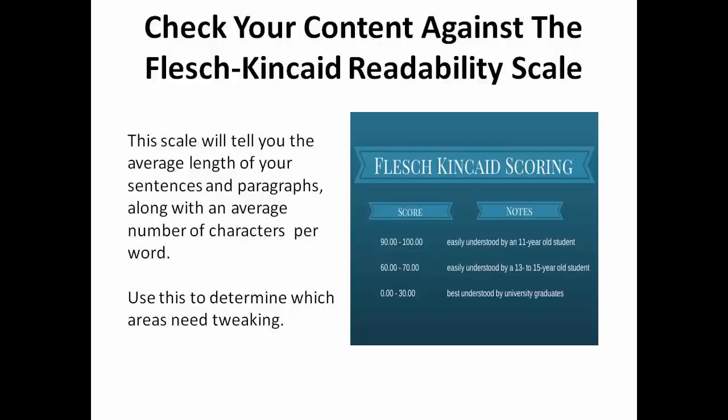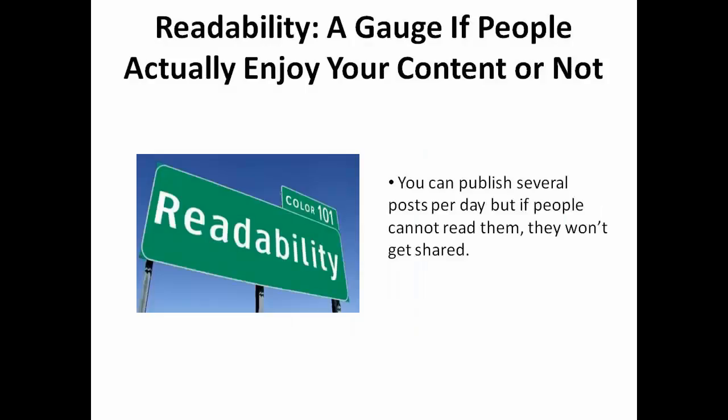As a final tip, you should check the Flesch-Kincaid reading scale in Microsoft Word. This is included as part of the spell checker and is also found in several SEO plugins for WordPress. The scale will tell you the average length of your sentences and paragraphs, along with an average number of characters per word. Use this to determine which areas of your content need tweaking.